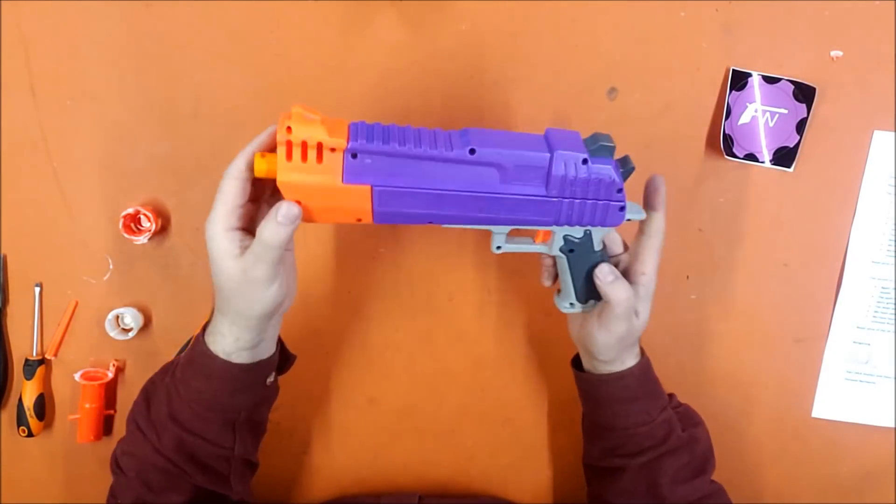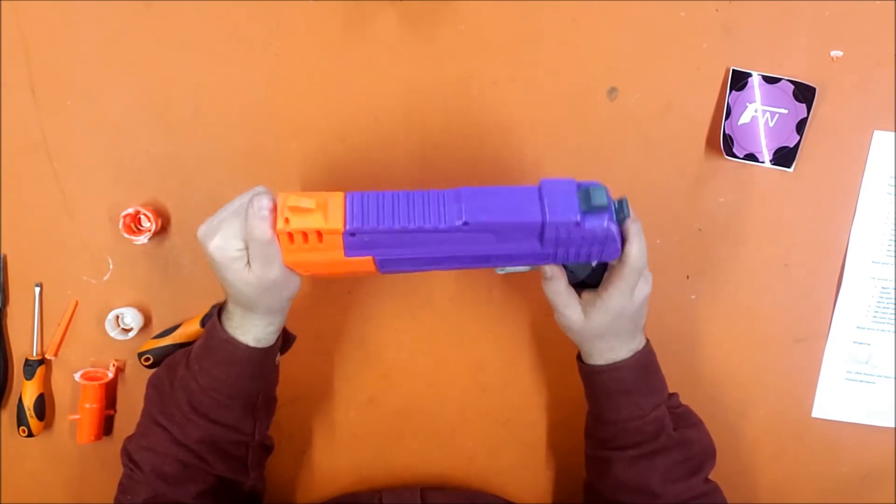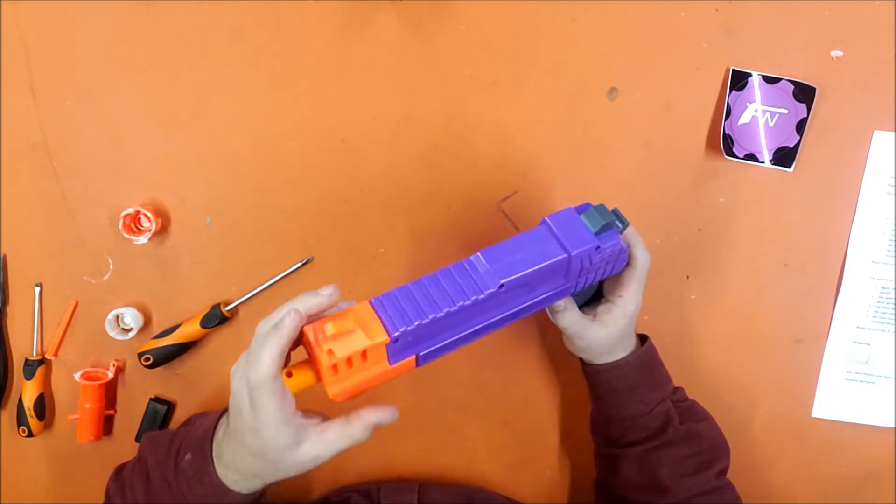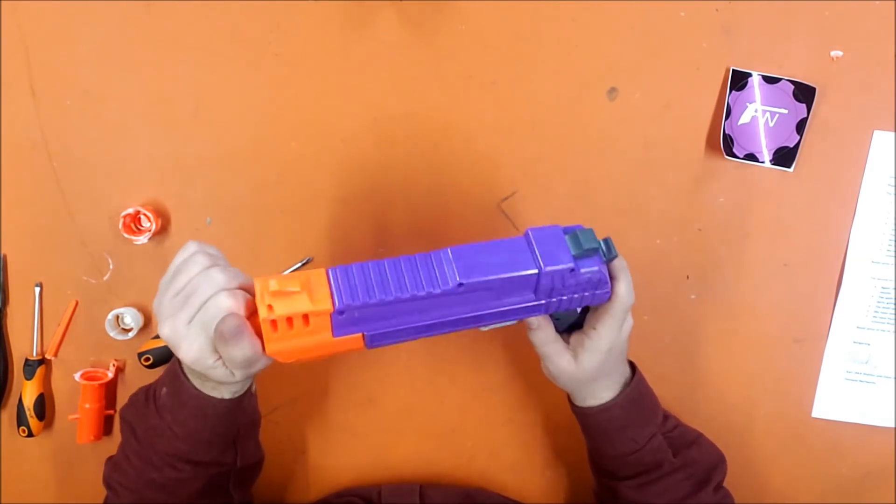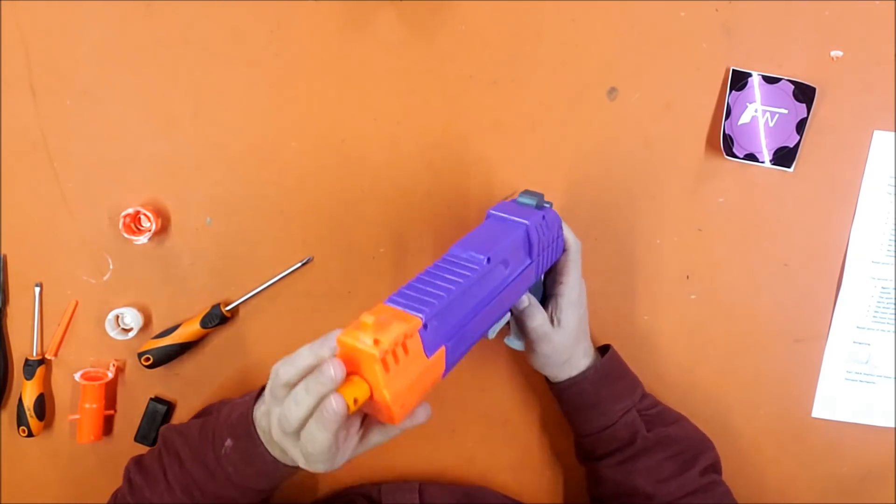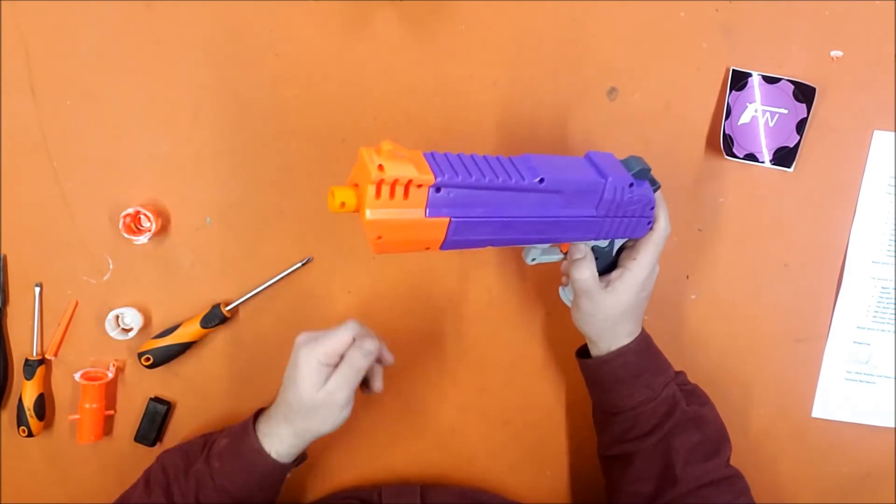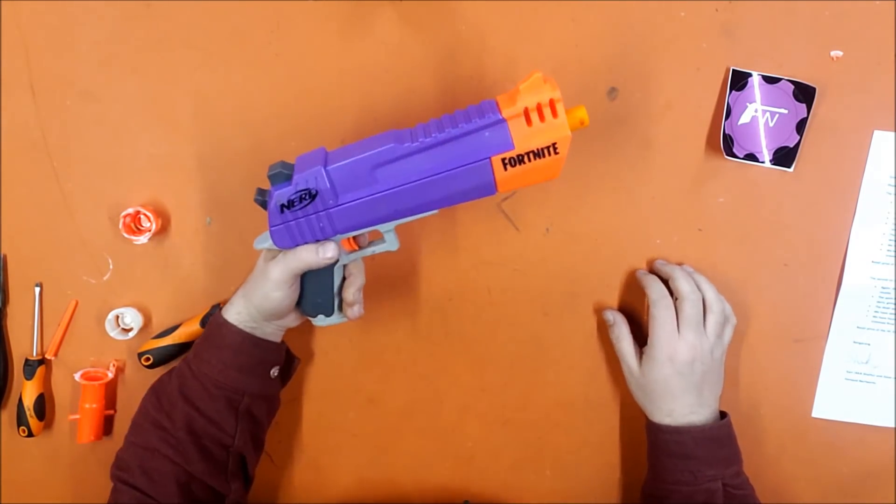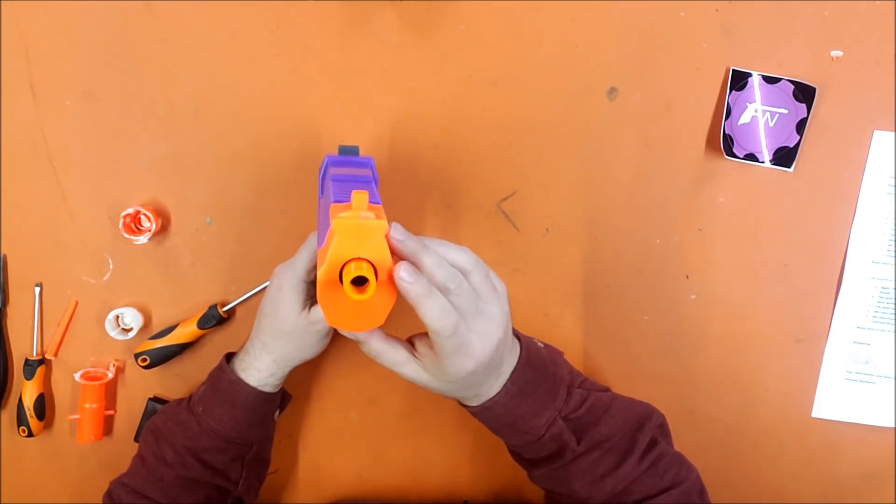Alright, well there it is installed in the hand cannon. I don't know how easy it's supposed to be to take that barrel out, or if you're even supposed to. You would need to if you wanted to rear load it though. Very cool. Simple installation.